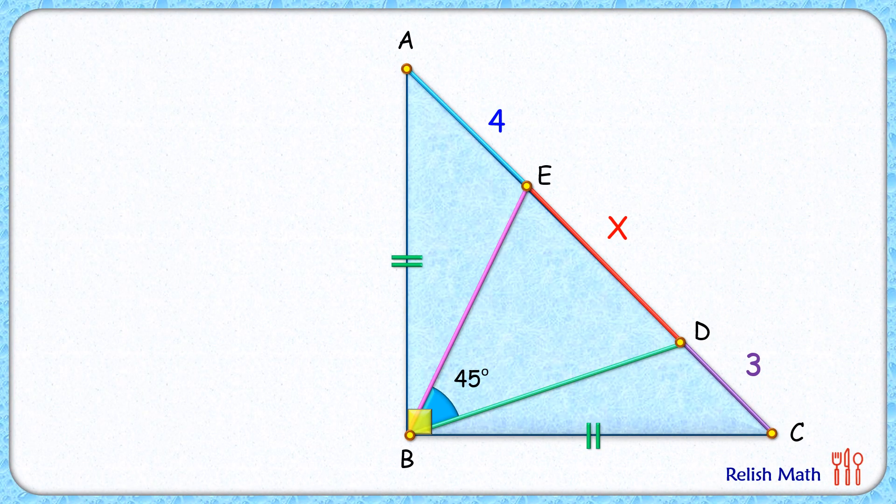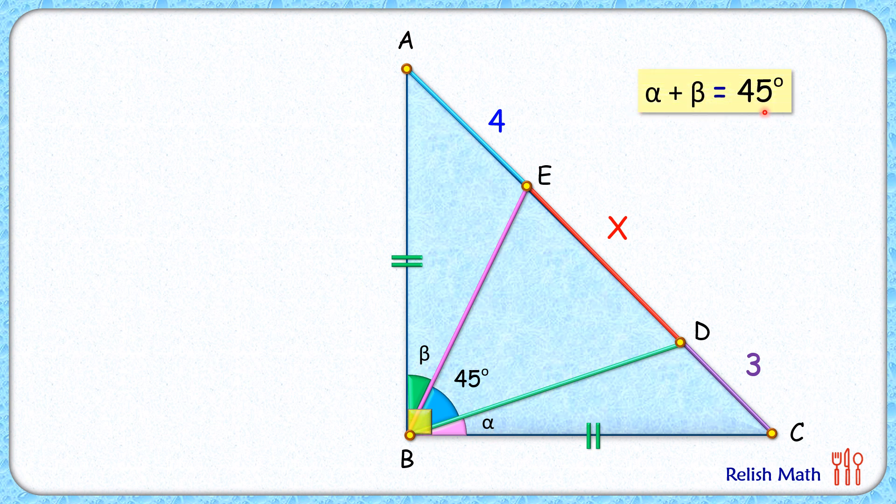Let's check this simple and elegant solution. Let's assume this angle here is alpha degrees and this angle is beta degrees. As full angle is 90, so we can say that alpha plus beta is 45 degrees.